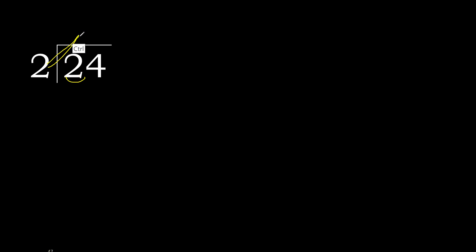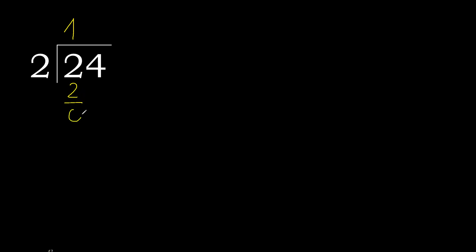2 multiplied by 2 is 4, which is greater. So 2 multiplied by 1 is 2. 2 minus 2 equals 0.